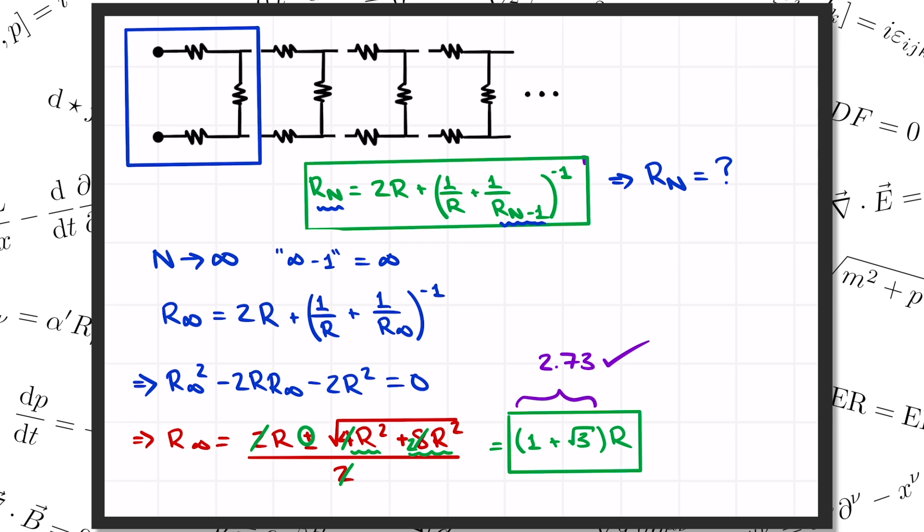So there we have it. You can try making other infinite ladders by combining different blocks of resistors, and apply the same recursive strategy to get the total. Again, if you want to see this written up, you can check out the link to the notes that I wrote up down in the description. While you're down there, please hit the like button, subscribe to the channel, and I'll see you next time.